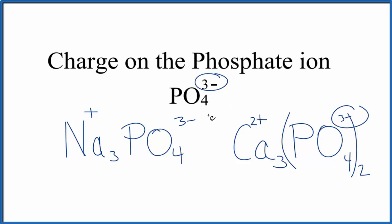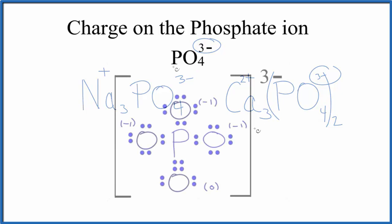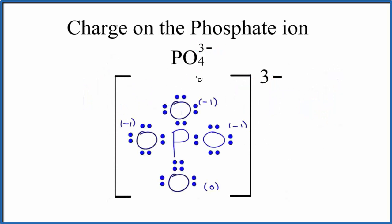We could also look at formal charges to find the charge on the phosphate ion. So this is a Lewis structure for the phosphate ion, and we have formal charges written in. Each of the oxygens with a single bond, these are all single bonds between the oxygen and the phosphorus, they have a formal charge of minus 1.